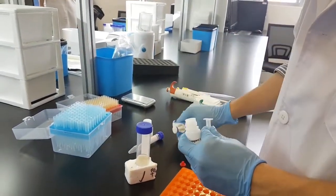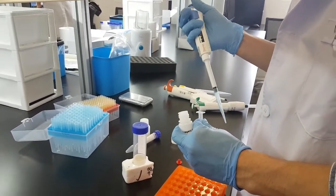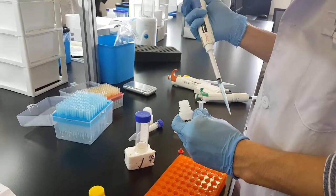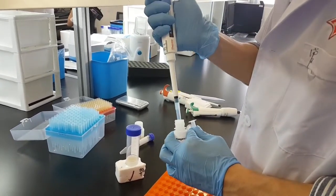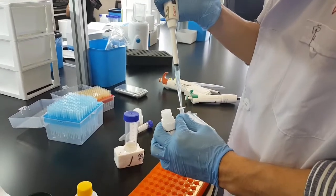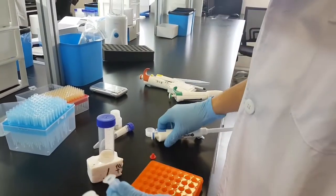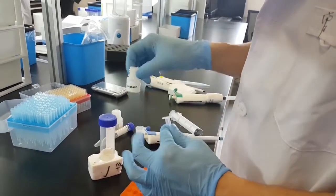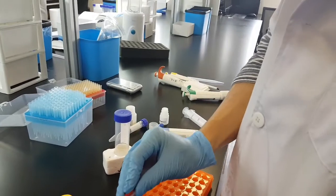All right, so we have here the two milliliter centrifuge tube. We will take 400 microliters of reagent C and put it into the extraction column. Close with the cap.